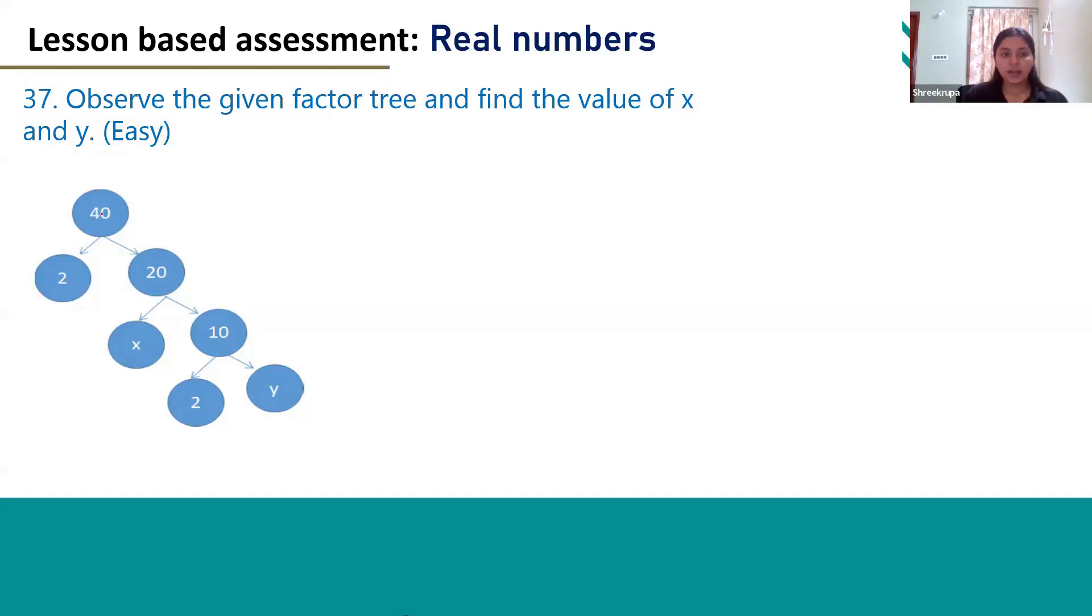40 can be factored as 2 and 20, and 2 times 20 is 40. If you divide 20 you will get 10 as one factor. We have to find out the other factor here.